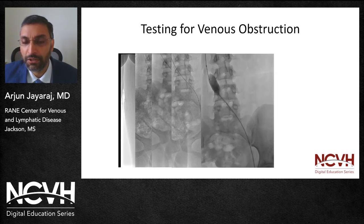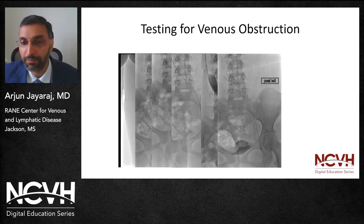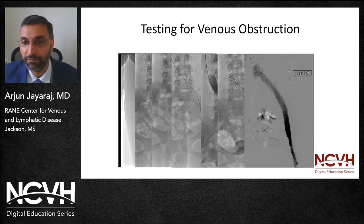Pharmacomechanical thrombectomy was performed using one of the easily available off-the-shelf devices. She had a very tight stenosis at the level of the common iliac vein confluence, suggestive of May-Turner syndrome, and we proceeded to perform angioplasty and stenting in order to provide her good outflow. And this is the completion venogram.